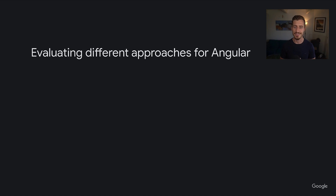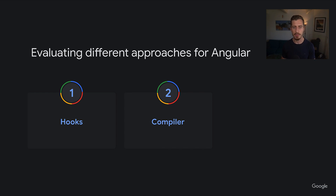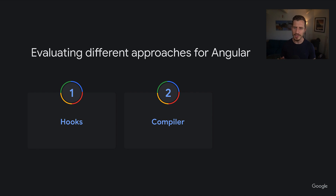The team explored the reactivity space in depth and compared different approaches in the context of Angular. We looked at hooks, but discovered that while they operate in a very similar way, they have very similar limitations as the current Angular system. We also explored compile-time transformations which enable reactivity at runtime. Angular has had a compiler since the very beginning, so we thought this was a natural fit. We looked into extending the compiler to add static dependency tracking similar to Svelte. However, we decided not to go that direction because it adds some extra magic which could impact the debugging experience for developers and also changes existing JavaScript semantics.